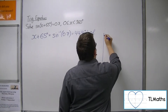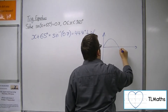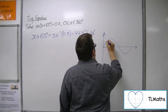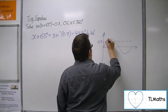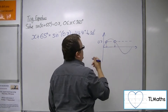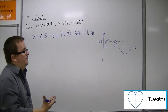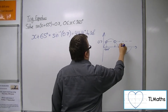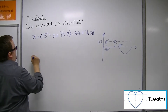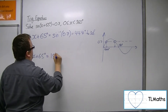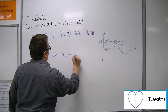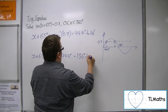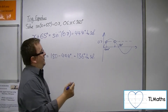Let's sketch sine. Notice I'm not going to sketch sine of x plus 65 — I'm sketching sine. Here's 0.7. If I was just solving sine x equals 0.7, I would get two solutions. Here's one. The other one I can find by doing 180 take away 44.4, which is 135.6 to 3 significant figures. So there's the second solution.